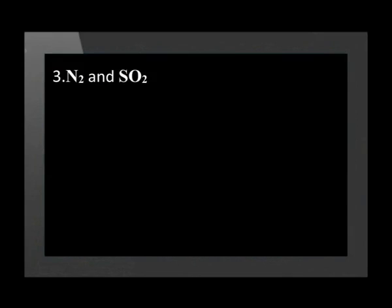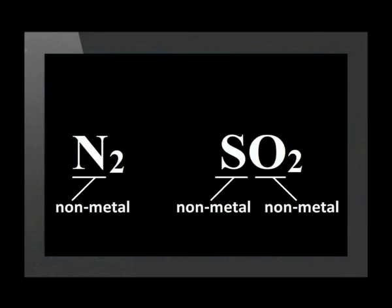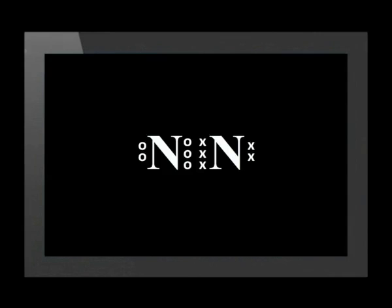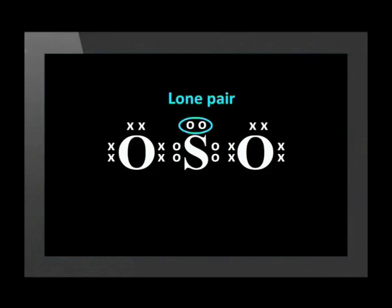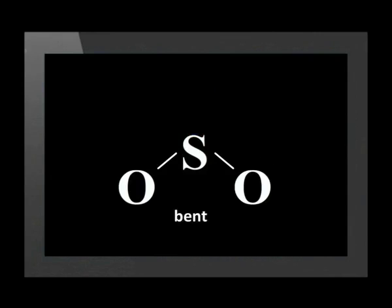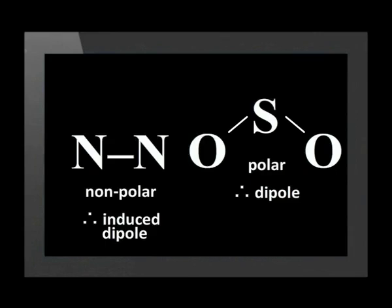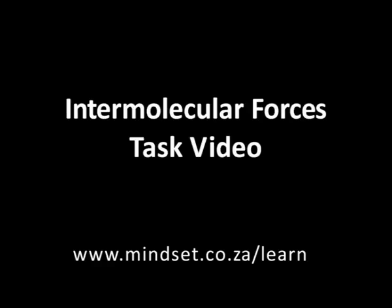Example three: what intermolecular forces exist between the molecules in a mixture of nitrogen and sulfur dioxide? All the atoms in both molecules are non-metals, so both molecules are covalently bonded. Nitrogen has a linear shape, making it non-polar — it could form an induced dipole. Sulfur dioxide has a bent shape due to the lone pair on the sulfur atom, making it polar with a permanent dipole. Therefore, the van der Waals forces between these two molecules are dipole-induced dipole forces. That is all for today grade 11s — join me in the next lesson when we learn about another type of intermolecular force. Until then, try the task video and see other lessons on the Mindset website. Goodbye.